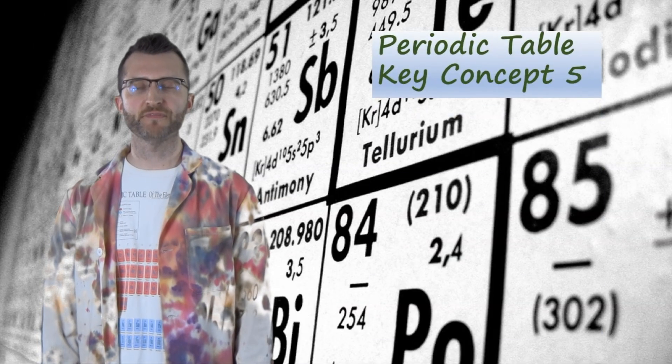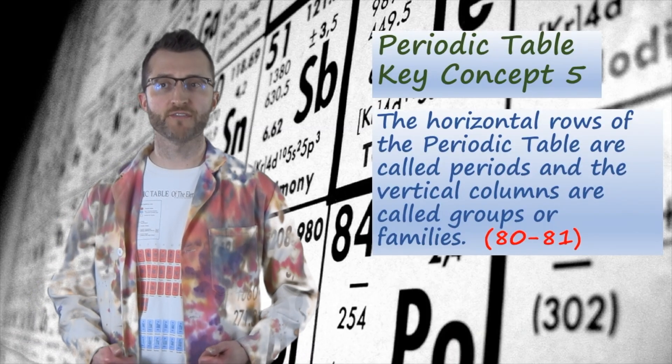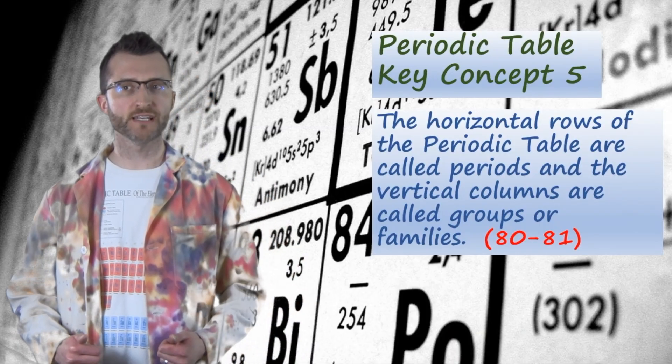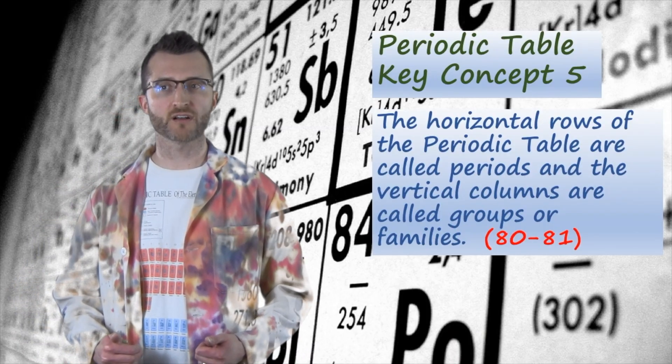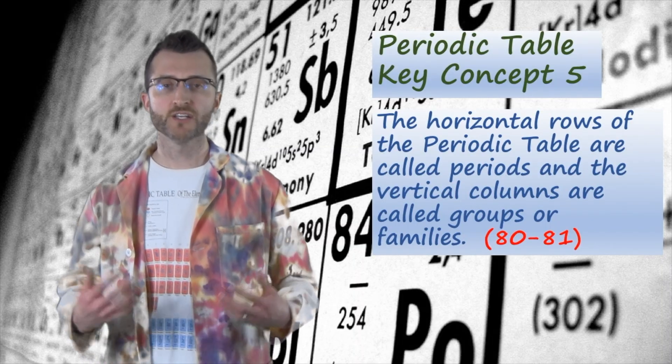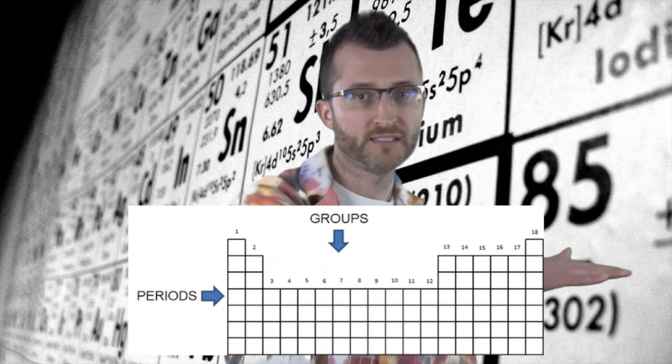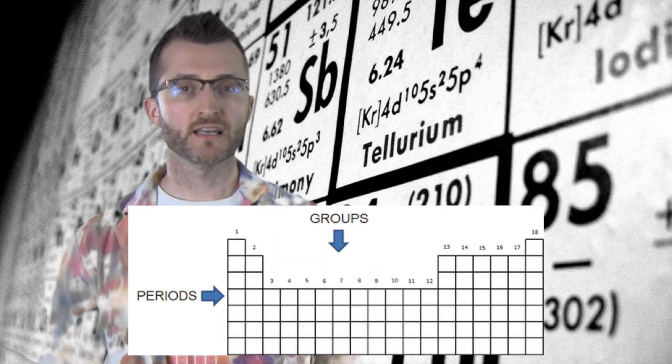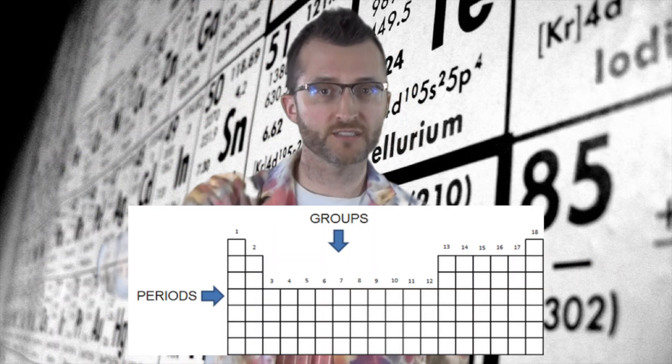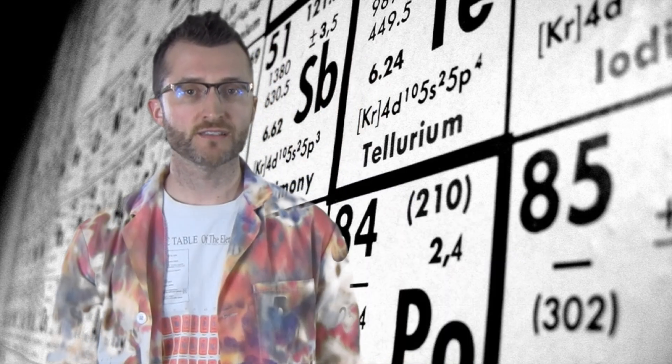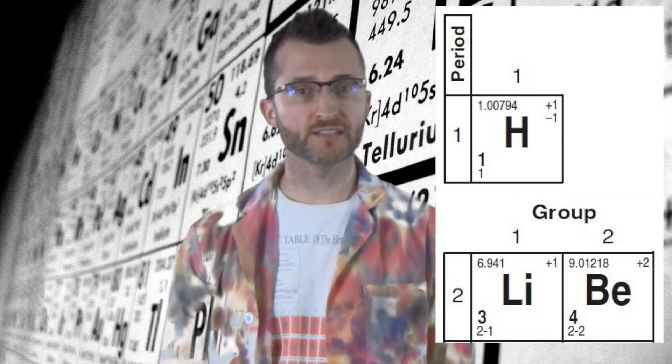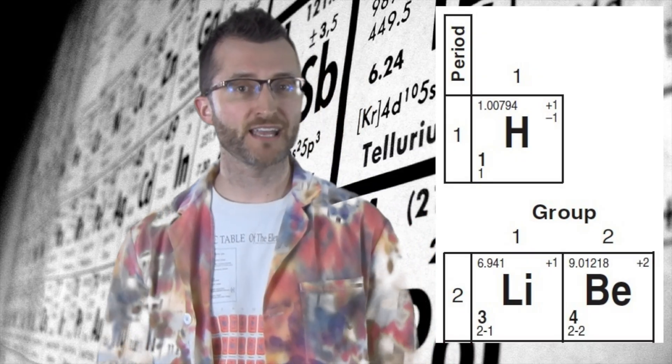Periodic Table Key Concept 5. The horizontal rows of the Periodic Table are called periods, and the vertical columns are called groups or families. Just to reiterate, rows run horizontally and are called periods. Columns run vertically and are called groups or families. Both are labeled directly on your Periodic Tables.